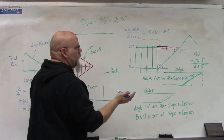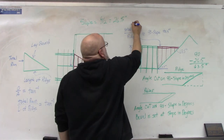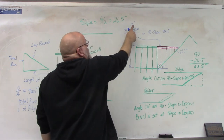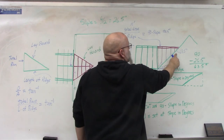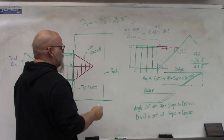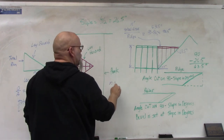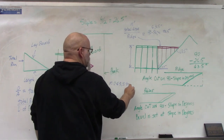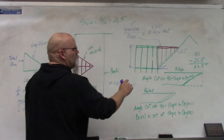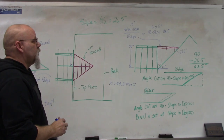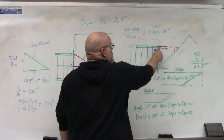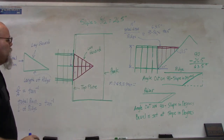Let's say the total rise is 10 feet — that's the distance from the top of the top plate to the top of the ridge. We know the angle over here is 63.5 degrees. On your calculator, put in 10 divided by tan(63.5) and hit equals. That will give you the length of the ridge board. So now we have the length of the ridge board.